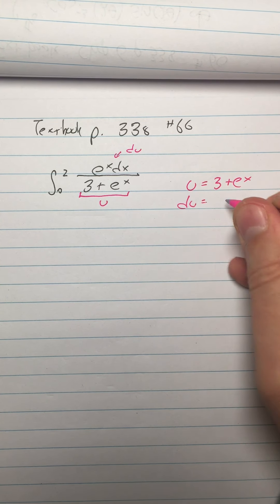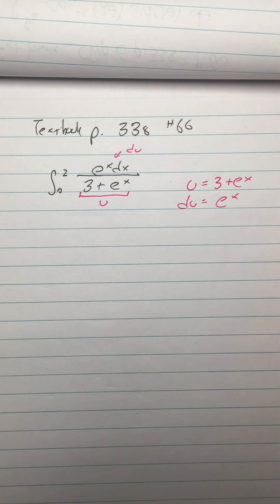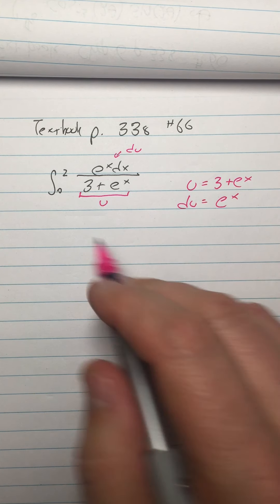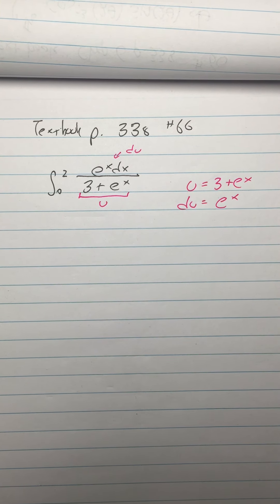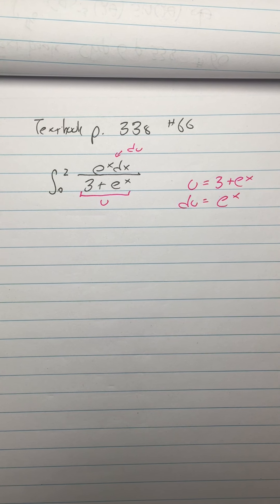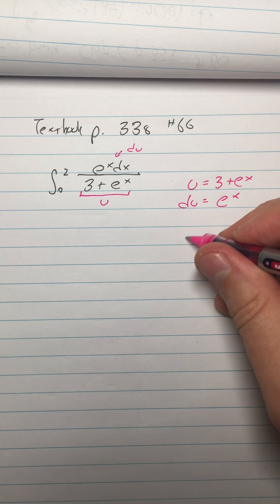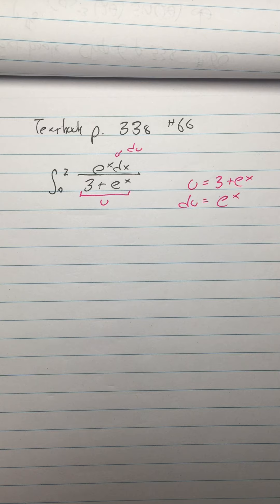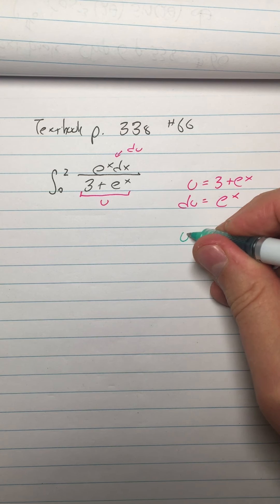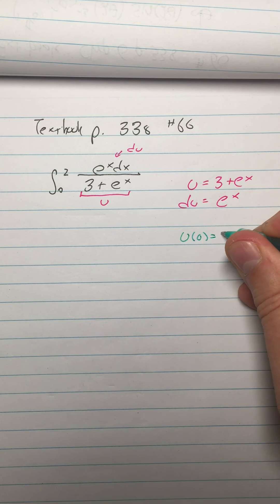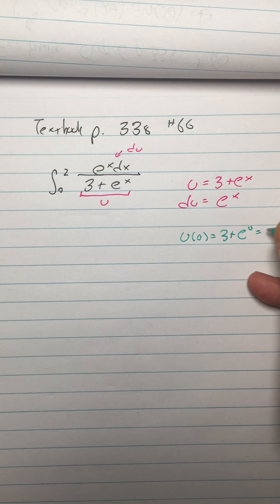And then du equals e to the x. All right, now the other thing I'm going to do is, this time I'm going to change the limits right away. So this is sort of the other way of doing it. So to lay that out nicely, let's say, what is u of 0? That would be 3 plus e to the 0, which is 4.